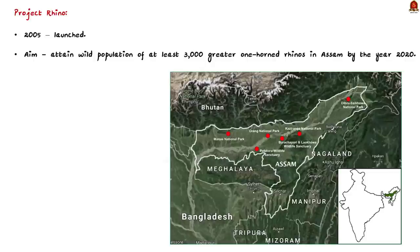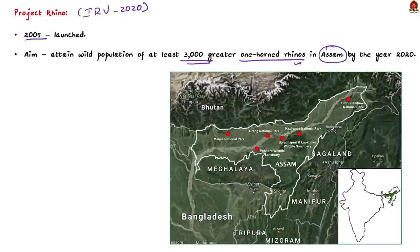Project Rhino is also called Indian Rhino Vision 2020. Launched in 2005, its main aim is to attain a wild population of at least 3,000 greater one-horned rhinos spread over 7 protected areas in Assam by the year 2020. The 7 protected areas include Kaziranga National Park, Pobitora National Park, Orang National Park, Manas National Park, Laokhowa Wildlife Sanctuary, Burachapori Wildlife Sanctuary, and Dibru-Saikhowa Wildlife Sanctuary.